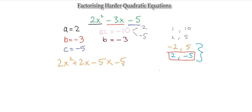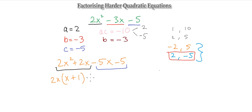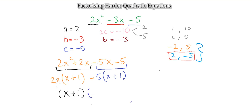Making our pairs: 2x squared plus 2x is one pair, and minus 5x minus 5 is the other. Factorizing the first part — 2x is common in 2x squared plus 2x: 2x times x gives 2x squared, and 2x times 1 gives 2x. For minus 5x minus 5, 5 is common: minus 5 times x gives minus 5x, and minus 5 times 1 gives minus 5. Inside both brackets we have the same expression, so our two brackets are x plus 1 and 2x minus 5.